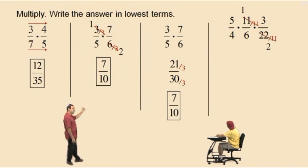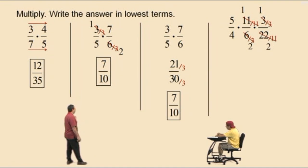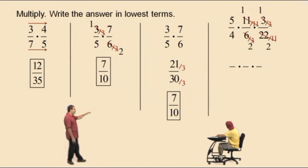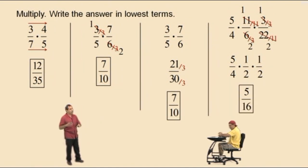Now, 5 fourths times 11 sixths times 3 over 22. Give me two numbers that have a common factor, Charlie. 11 and 22 — both divisible by 11. 11 divided by 11 is 1, and 22 divided by 11 is 2. Any other numbers from the numerator and denominator with a common factor? 3 and 6 — both divisible by 3. 3 divided by 3 is 1, and 6 divided by 3 is 2. Multiplying numerators: 5 times 1 times 1 is 5. Denominators: 4 times 2 times 2 is 16. Our answer is 5 sixteenths.